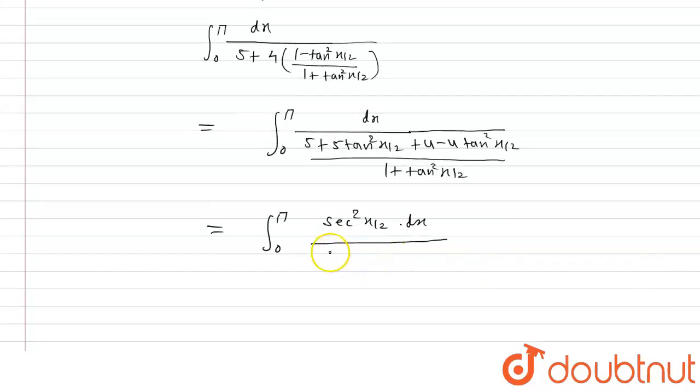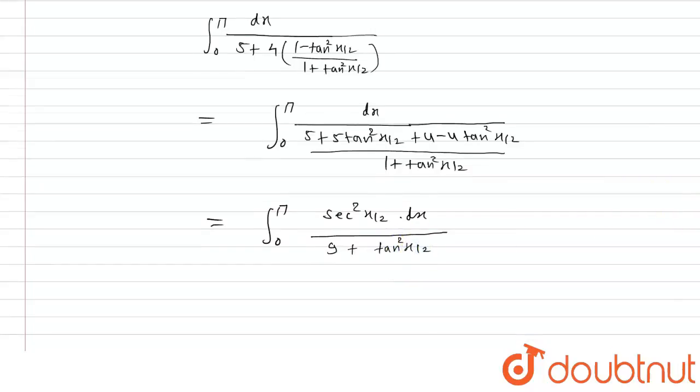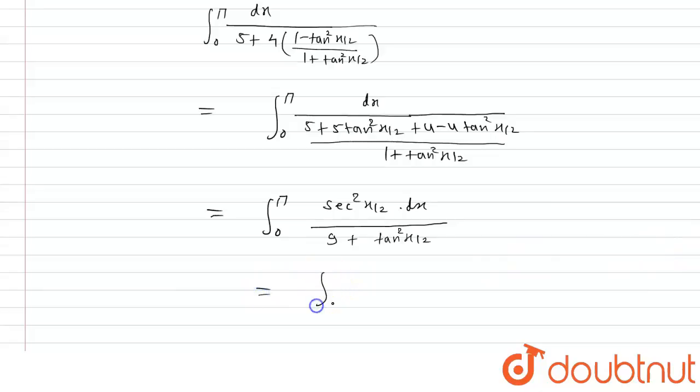So 1 plus tan square x by 2 minus 4 tan square x by 2, that is tan square x by 2. And we can write it in similar manner, that is sec square x by 2 divided by, we can write it 9 as 3 to the power 2 plus tan square x by 2 plus tan square x by 2 dot dx.